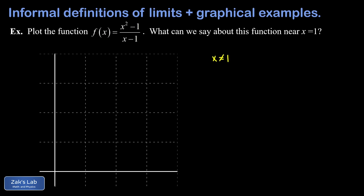We also notice the formula simplifies nicely. Looking at x squared minus 1 over x minus 1, the numerator is a difference of two squares — we can write that as (x+1)(x-1). The x minus 1 in the denominator cancels the x minus 1 in the numerator, and our function simplifies to x plus 1.